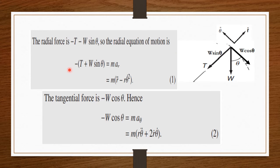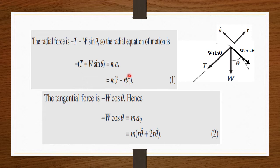So the radial equation will be: −(T + w sinθ) = m·aᵣ, where aᵣ is the radial acceleration. aᵣ = r̈ − rθ̇². This is equation number one — the radial equation of motion.